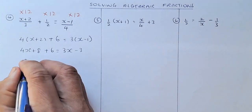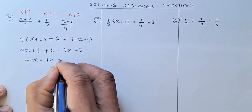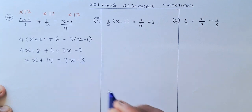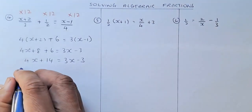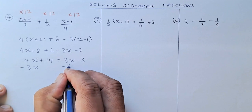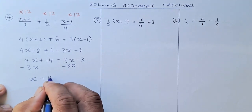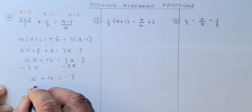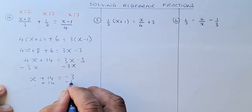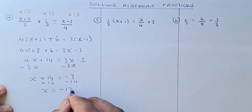Simplify the left side: 4x plus 14 equals to 3x minus 3. Get rid of the 3x by subtracting 3x on both sides. Then minus 14 on both sides, so x equals to negative 17.